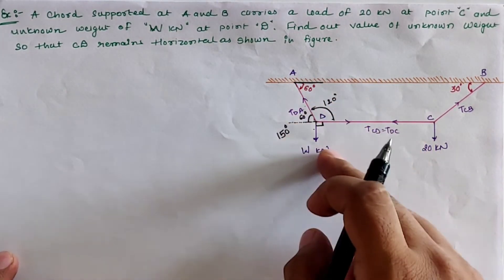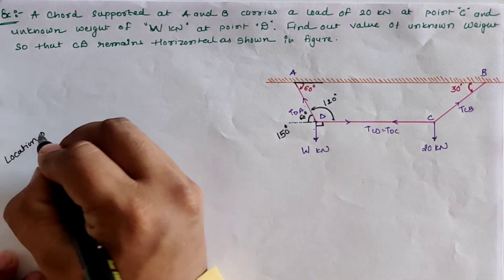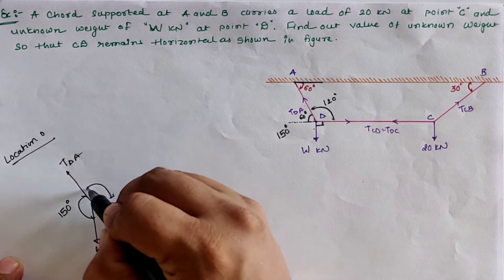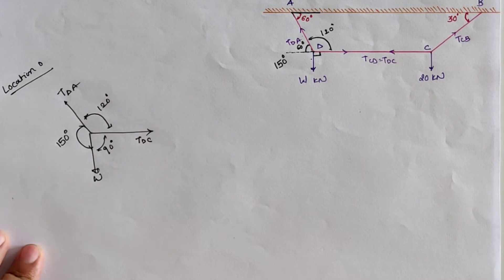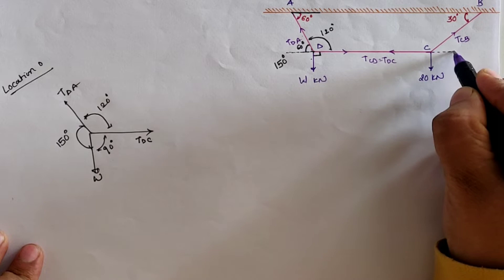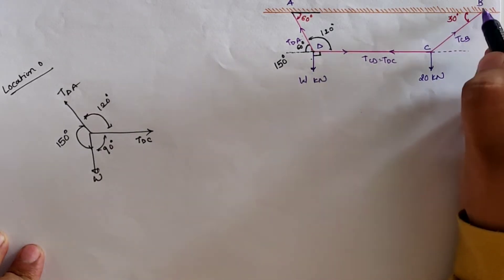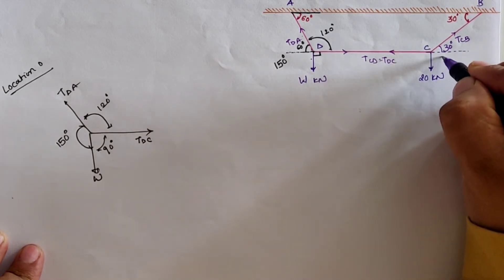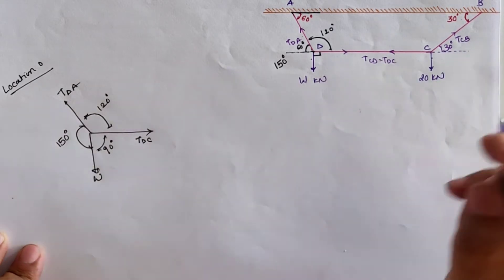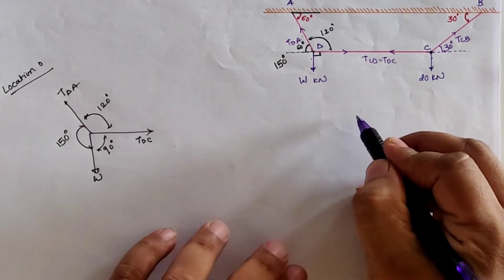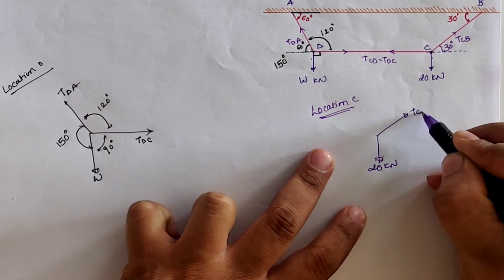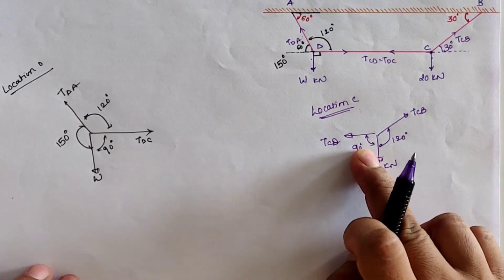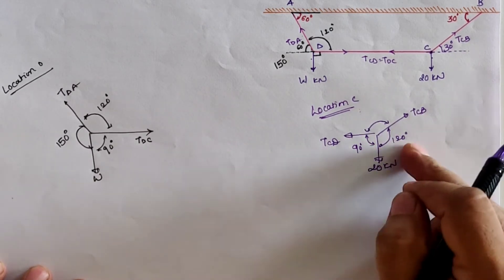If we draw a free body diagram at location D, we get those three forces with the calculated angles. Similarly, for location C, if we pass a line along D to C, then by the property of parallel lines, we get the angle of 30 degrees with TCB. The total angle with the 20 kilonewton load is 30 plus 90 equals 120 degrees. Drawing the free body diagram for location C, the total angle is 120 plus 90 equals 210, hence the remaining angle is 360 minus 90 minus 120 equals 150 degrees.